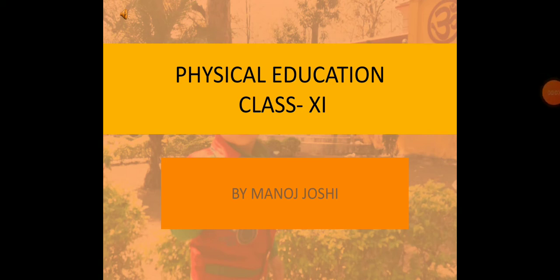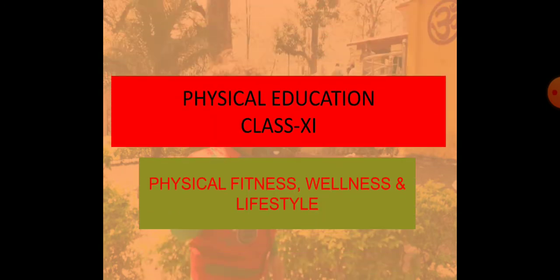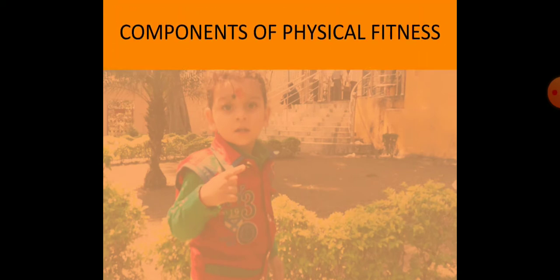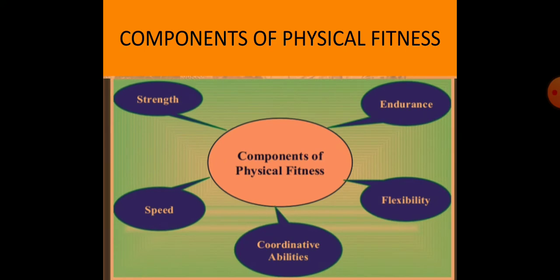Good morning. Today we continue the lesson on physical fitness, wellness and lifestyle. In this chapter we have discussed the components of physical wellness. Now we are discussing the components of physical fitness, which include strength, speed, endurance, flexibility, and coordination — five components in total.